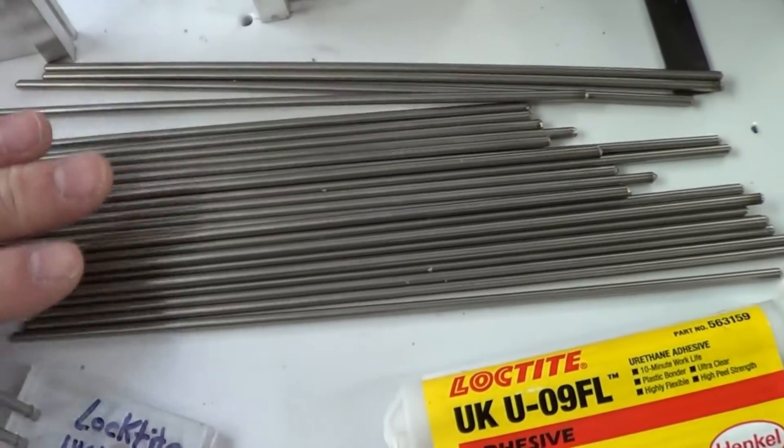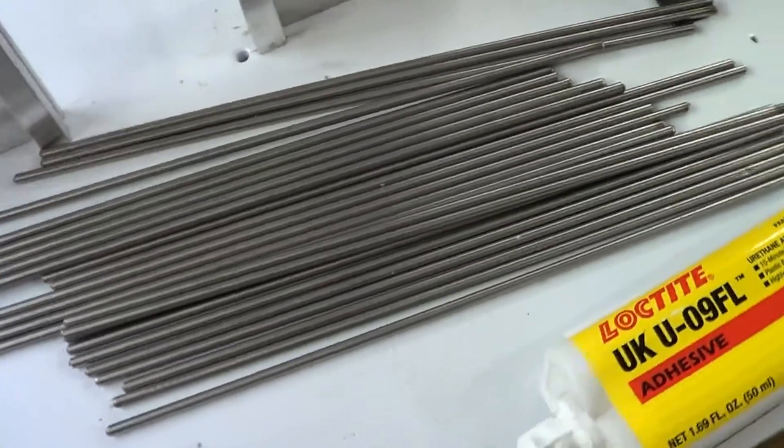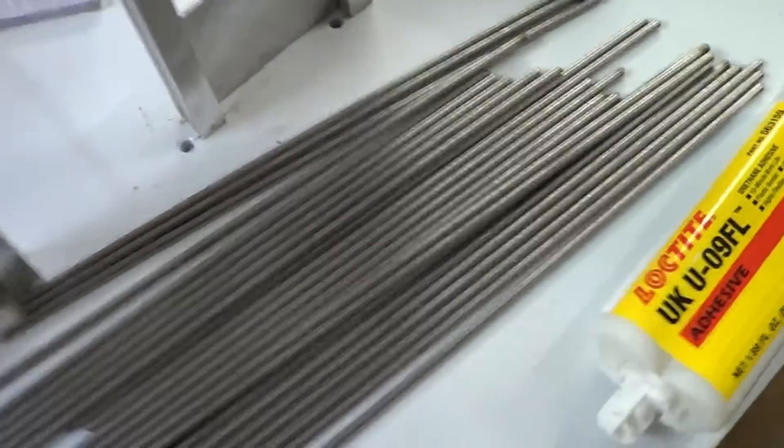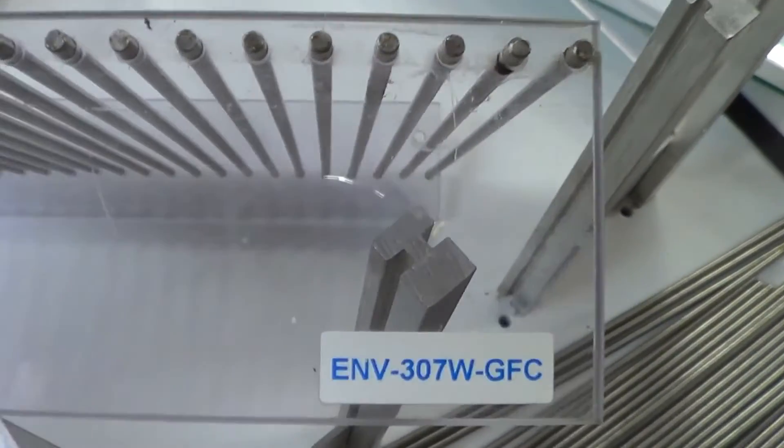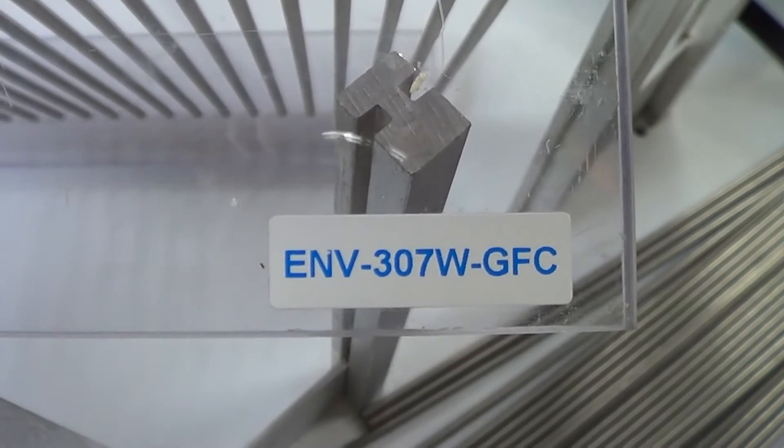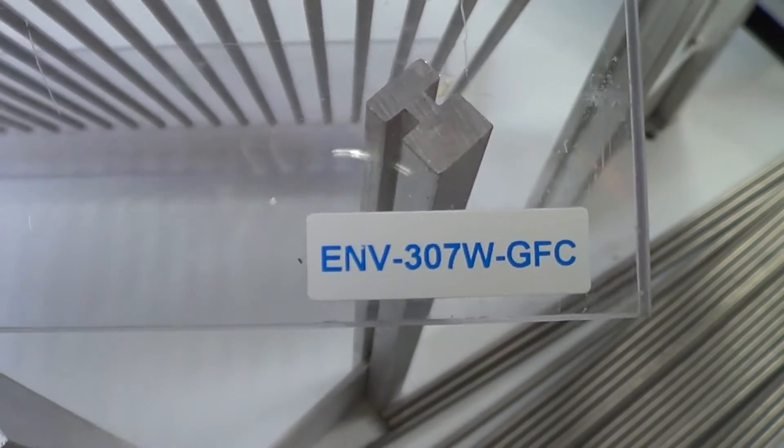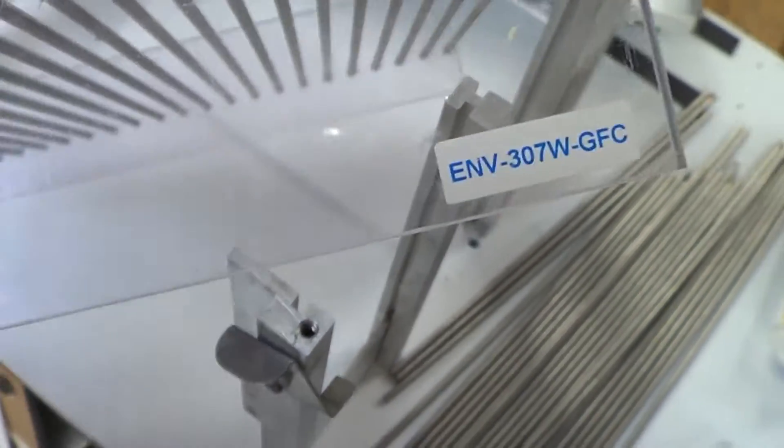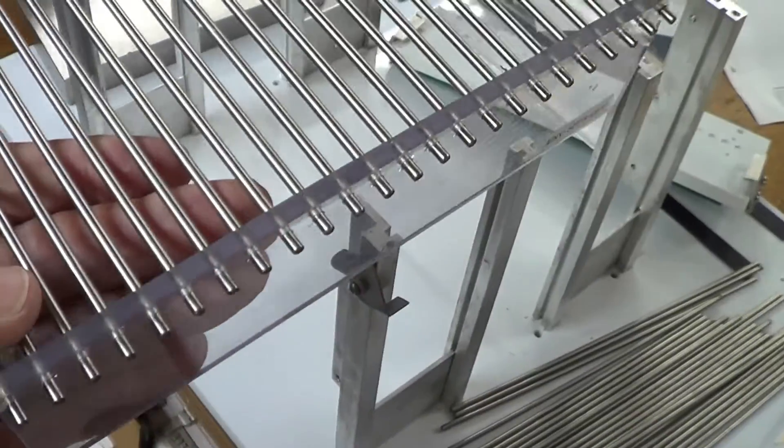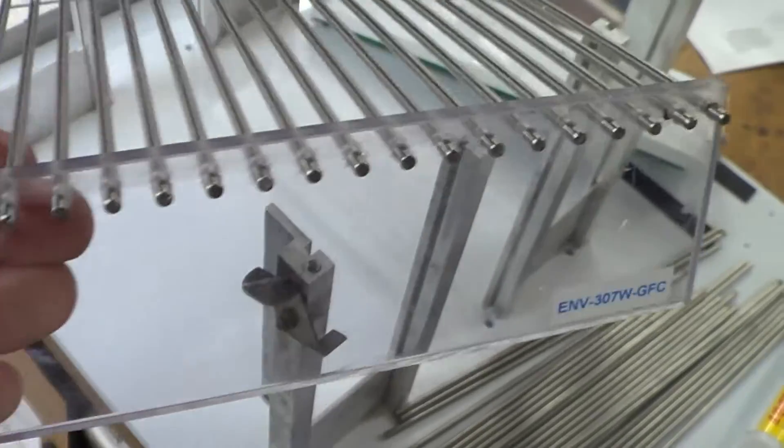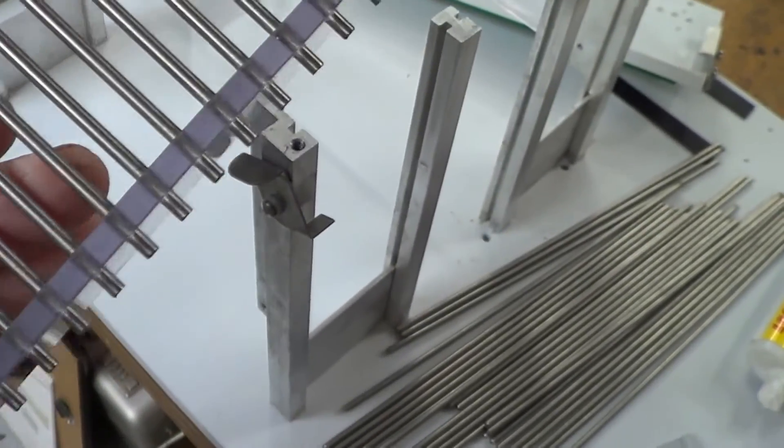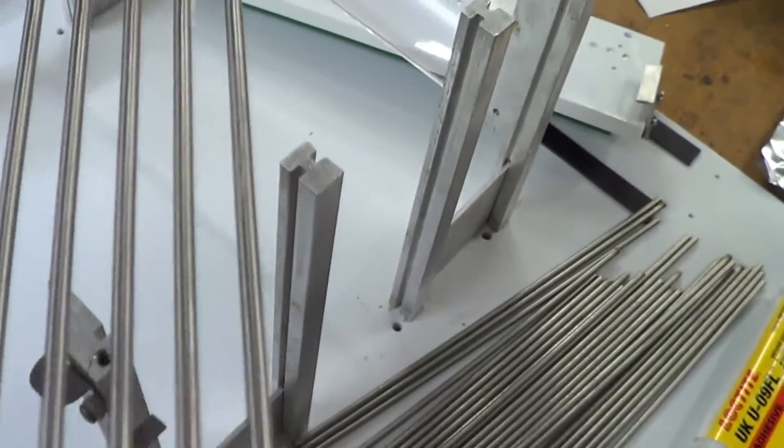I've got all these rods here that I need to install into a panel. I'm working on a Met Associates grid floor. This one's an ENV-307W-GFC. I need to make a larger version of this, and so I was curious about how to embed the stainless steel rods in the acrylic. They seem to have done a pretty good job. I'm not sure what kind of adhesive they're using, but I found a product that seems to work well.